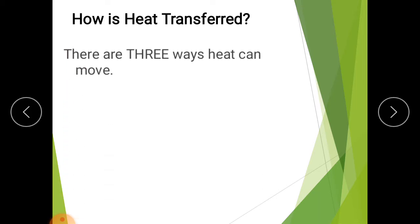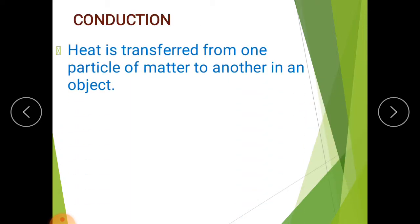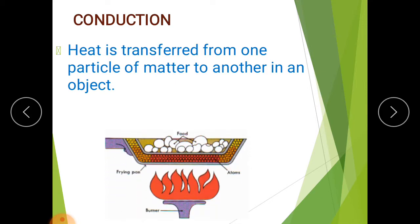How is heat transferred? There are three ways heat can move: conduction, convection, and radiation. We are going to discuss conduction today. What is conduction? Heat is transferred from one particle of matter to another in an object. This is known as conduction, or you can say the movement of heat through a solid such as metal is called conduction.